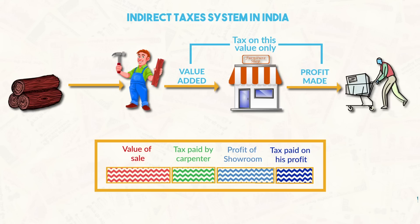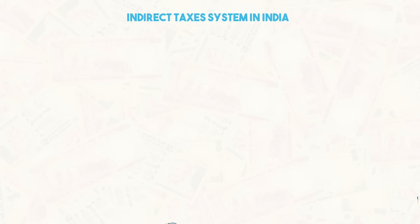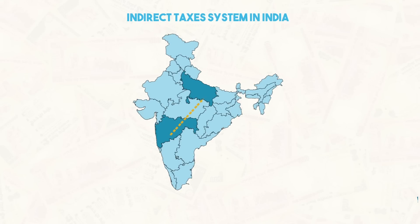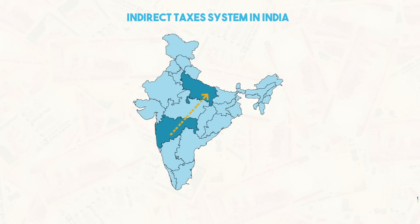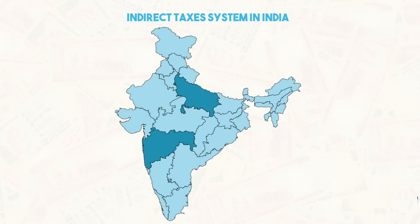Input tax credit means setting off the amount of tax paid on inputs by the dealer against the tax to be paid at the output stage. If the sale is from one state to another, the state government cannot levy a sales tax on this sale as it will distort the free movement of goods — this is a constitutional requirement. To compensate the selling state for the loss of sales tax, the central government levies a Central Sales Tax and transfers the entire amount to the selling state.